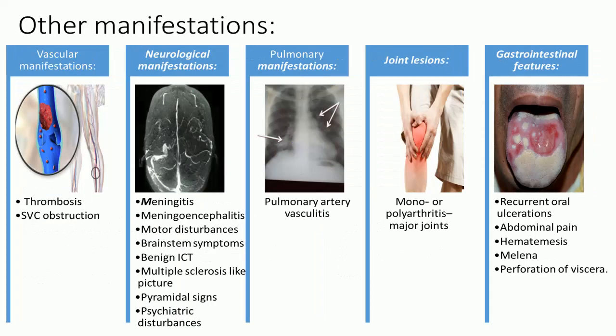Vascular manifestations: patients can have superficial and deep vein thrombosis and superior vena cava obstruction. Neurological manifestations include meningitis, meningoencephalitis, motor disturbances, brainstem symptoms, benign intracranial tension, multiple sclerosis-like picture, pyramidal signs, and psychiatric disturbances.